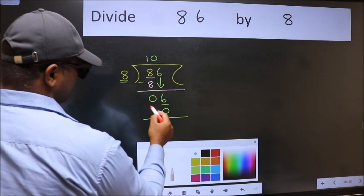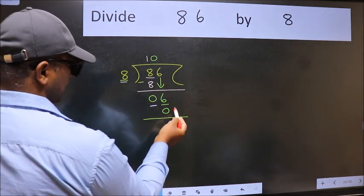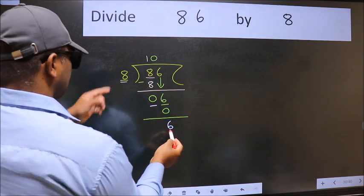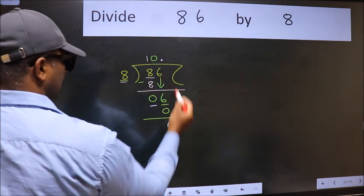Now we subtract. We get 6. Over here, we did not bring any number down. And 6 is smaller than 8. So now we can put dot and take 0.